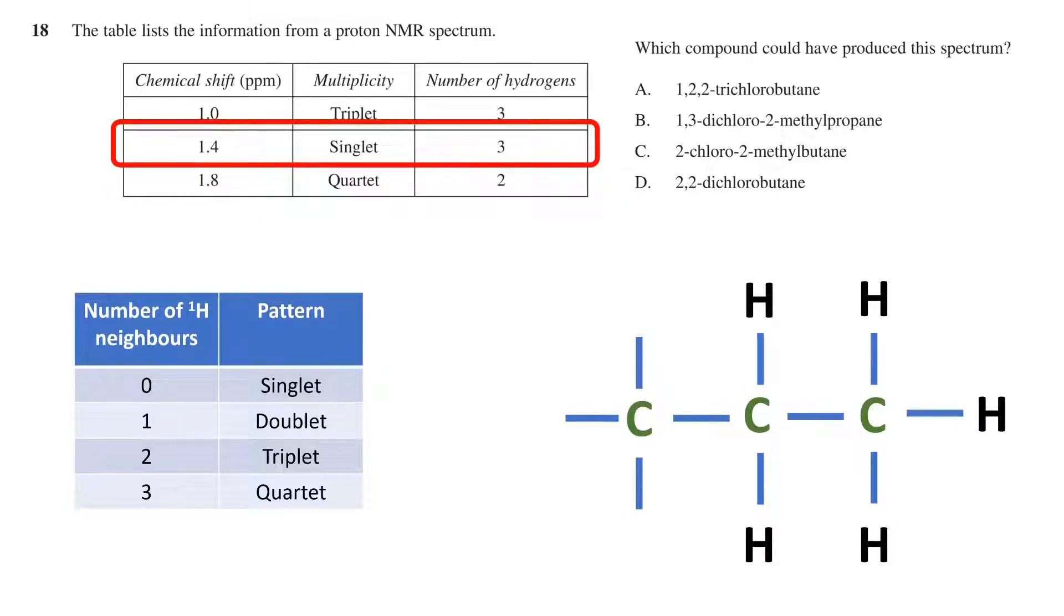The last signal has a chemical shift of 1.4 parts per million, is a singlet, and there are three hydrogens in this environment. We can see just attaching a carbon with three hydrogens attached to our chain actually agrees with this signal. It is a singlet,